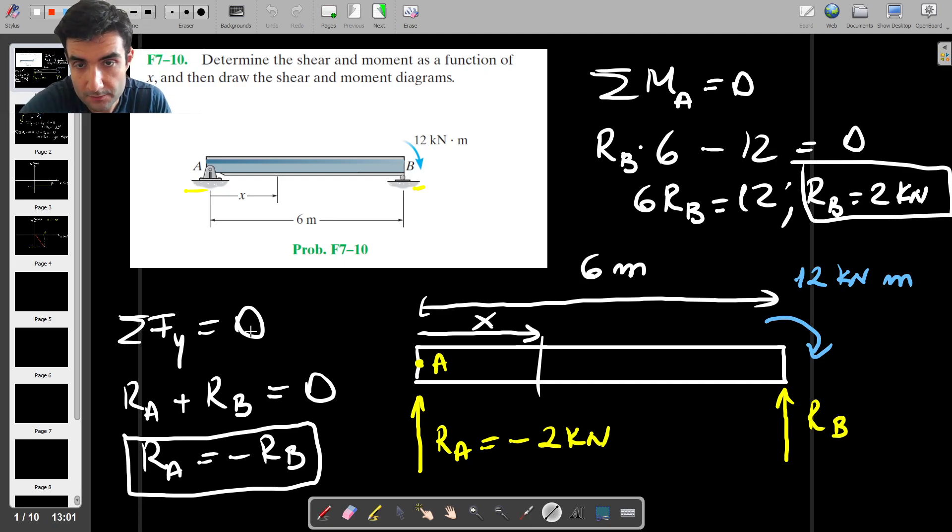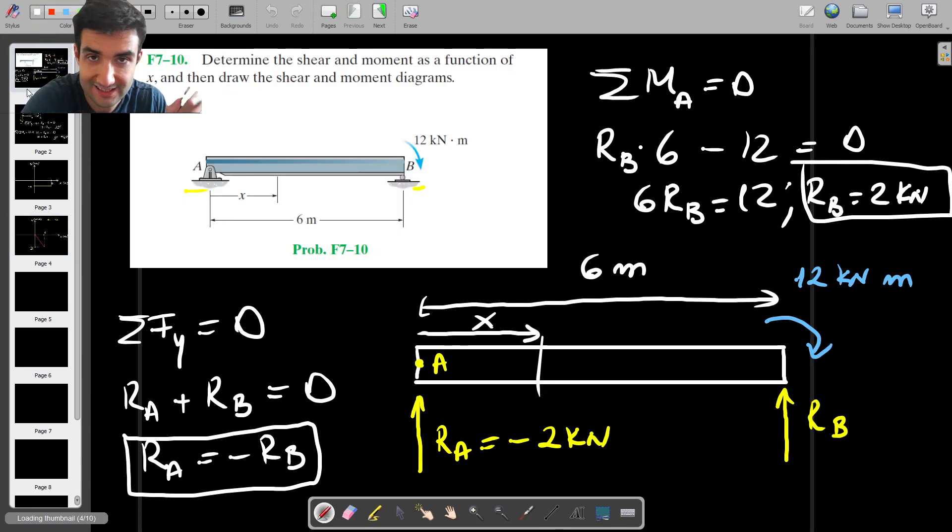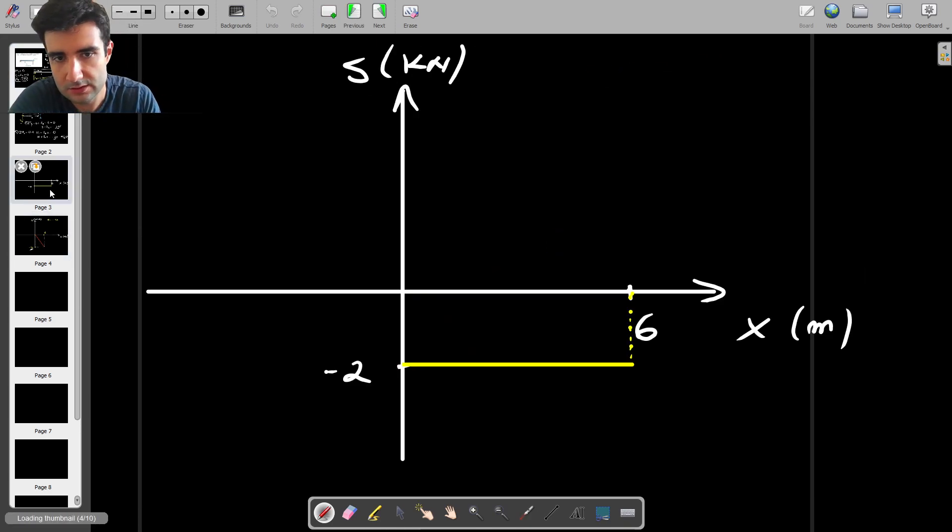We don't have any moment at A, because end A is free, and then we end up with a moment at B. So even though B is on a roller, which normally doesn't give you any moment, so typically we would have looked at problems where both ends have a moment of 0. But the moment at B, as you can see, is not 0, it's minus 12. And the reason for that is because that external moment is acting on point B, which is where that moment here comes from. So that's the bending moment diagram. That's the shear force diagram, and that's the end of the question.